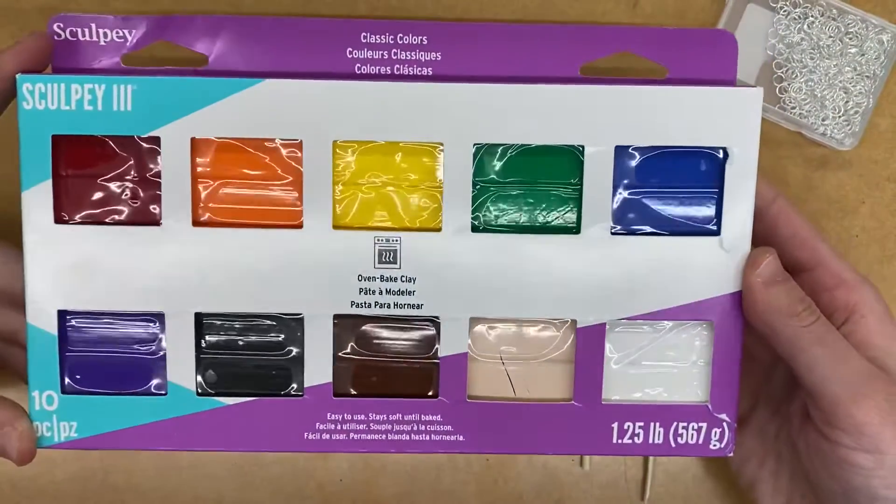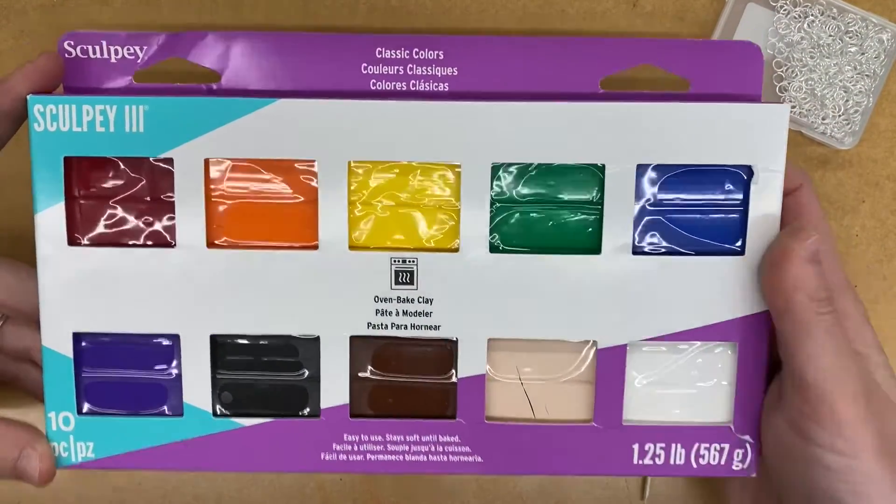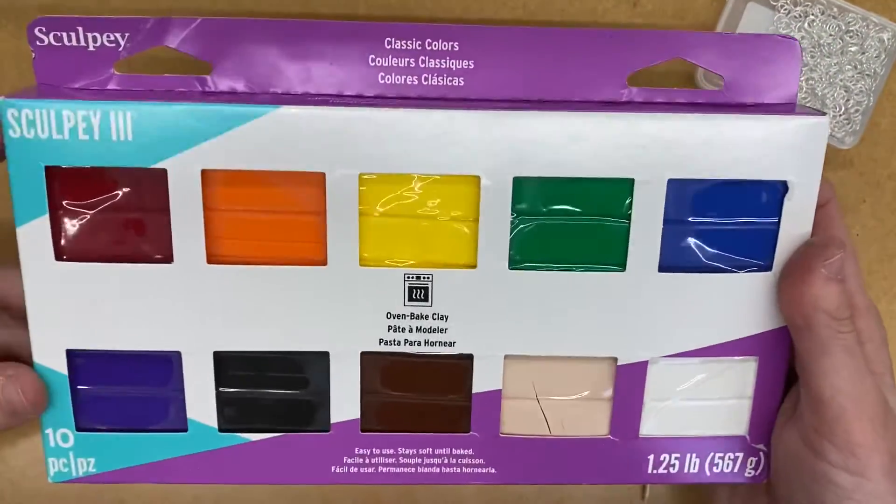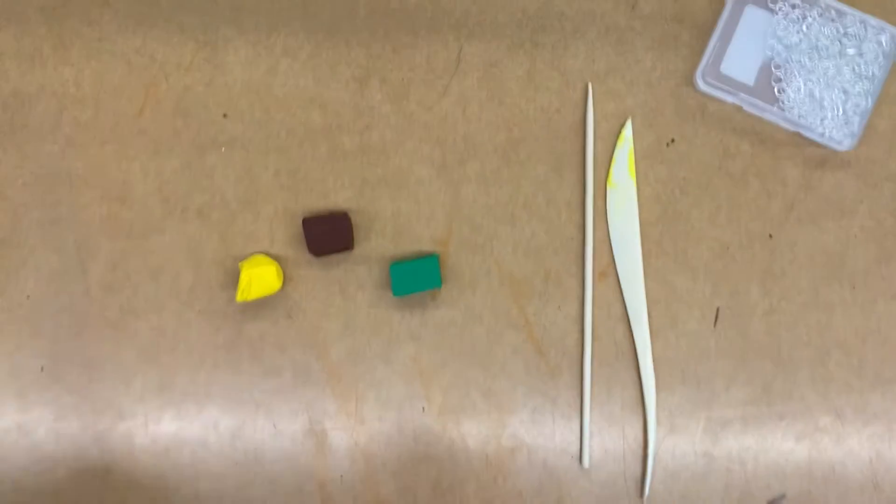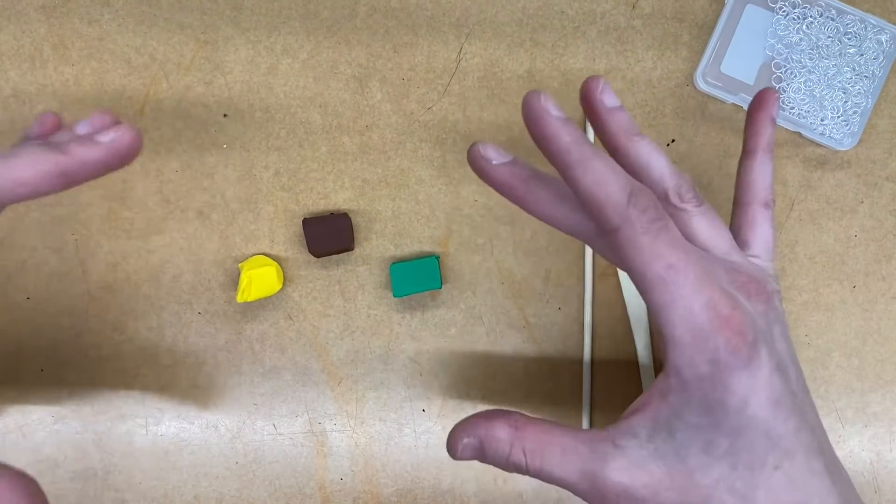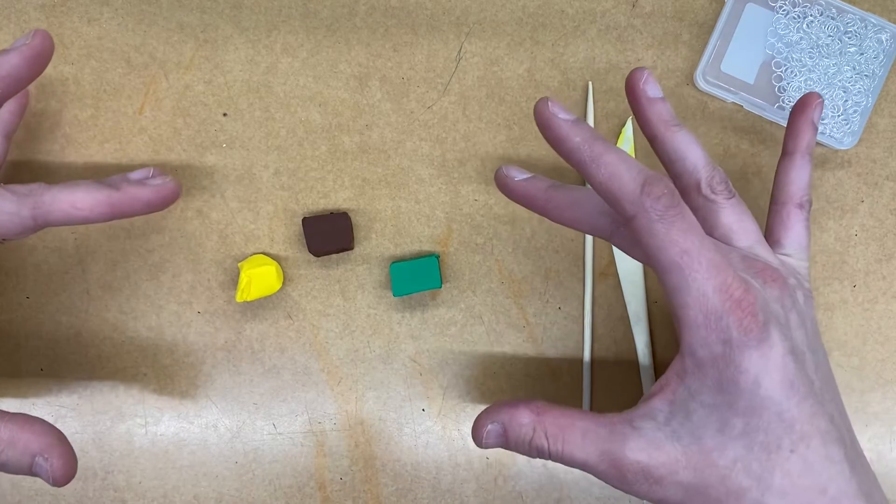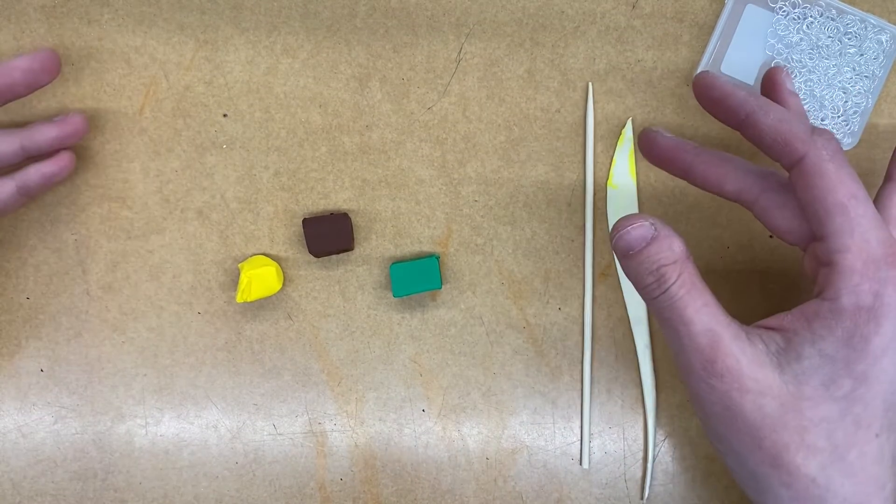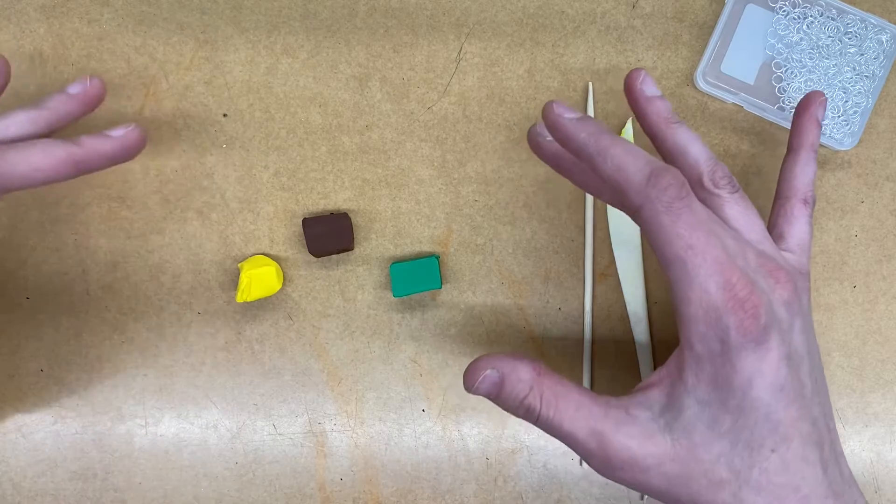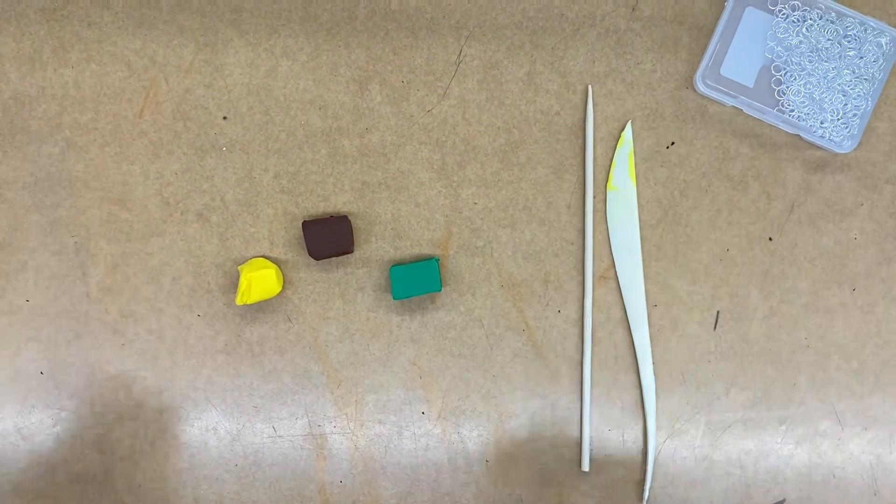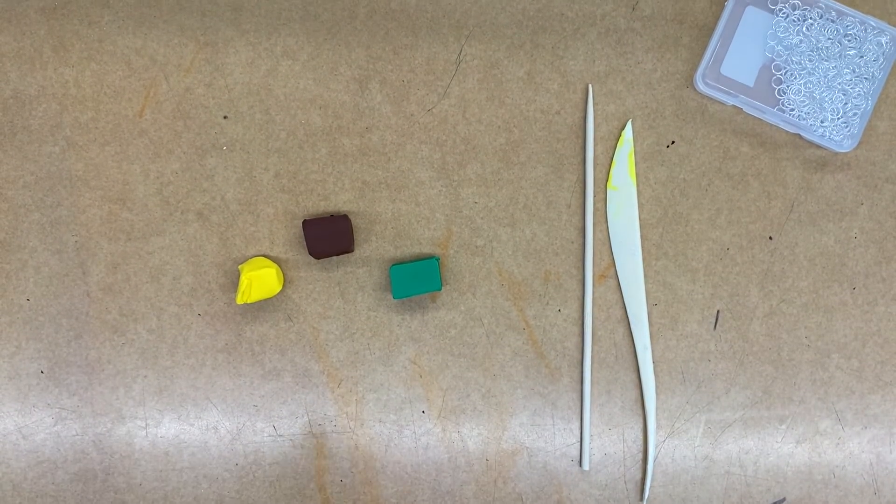Alright, so these are the basics. These are the colors of the rainbow along with these four neutrals down here. So, if you need a different color than what is already in the package, then great. You can take two, maybe even three colors, mix them together. You can also create a marbling effect if that's something that you want to stick with.